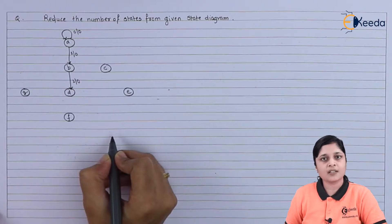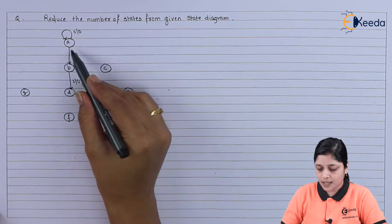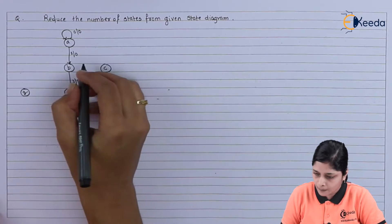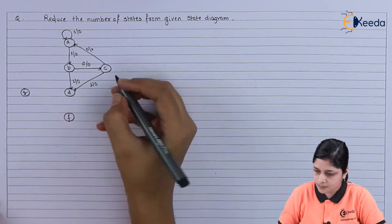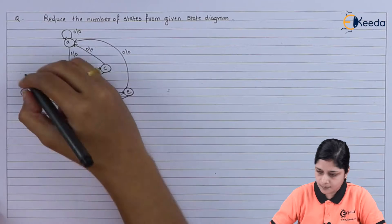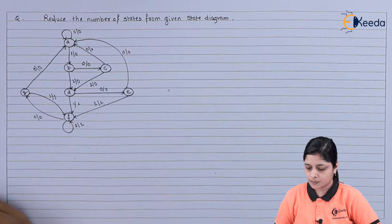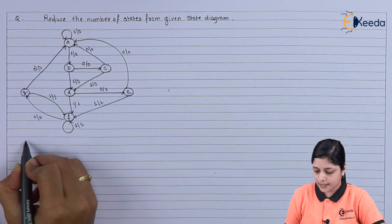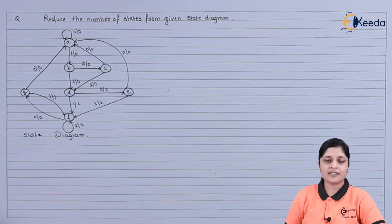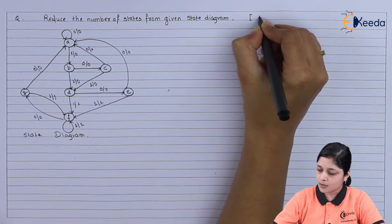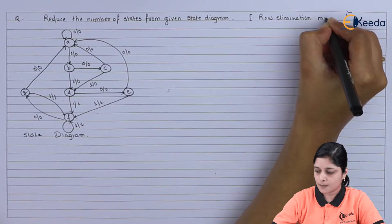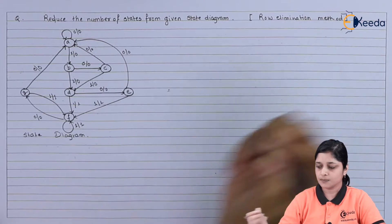I am going to draw the given state diagram for simplification. These are all the states: A, B, C, D, E, F, and G. I am mentioning the next state and the respective output for each state. We will use the row elimination method to reduce the number of states.